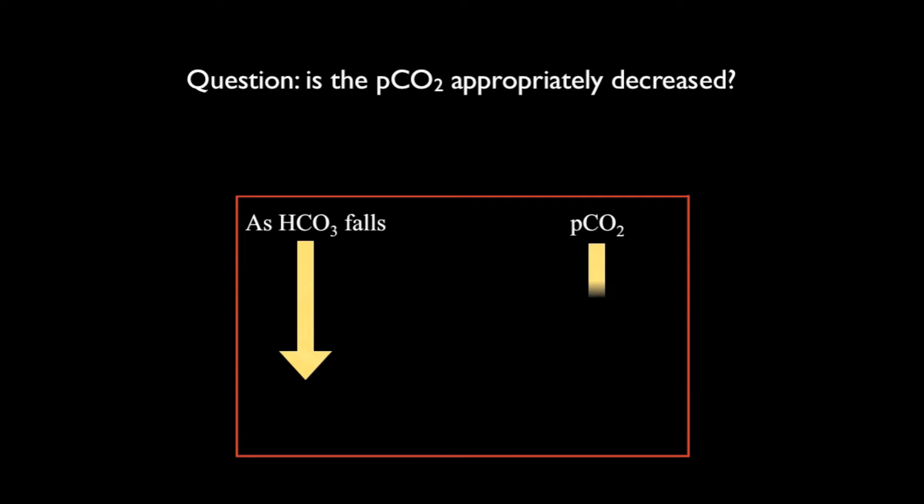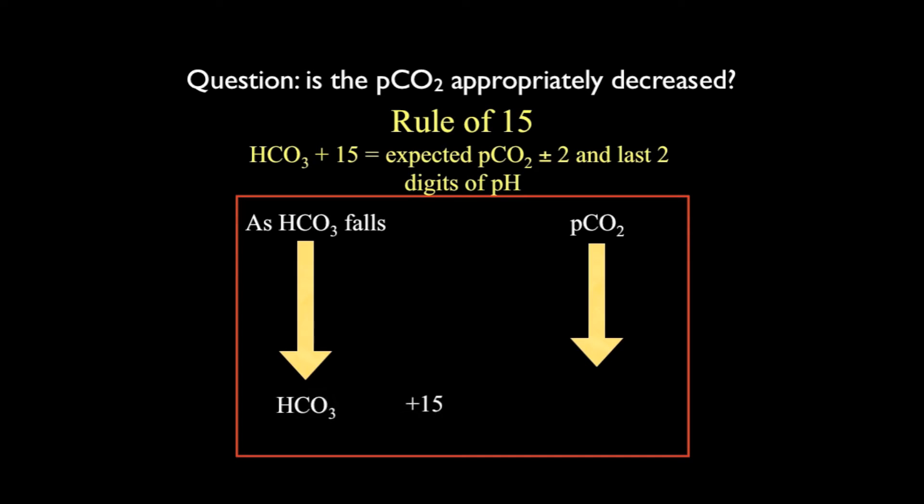As bicarb falls, PCO2 falls. And the rule of 15 states that the measured bicarb plus 15 should equal the new expected PCO2 on your venous blood gas, plus or minus 2. It'll also equal the last two digits of the pH.